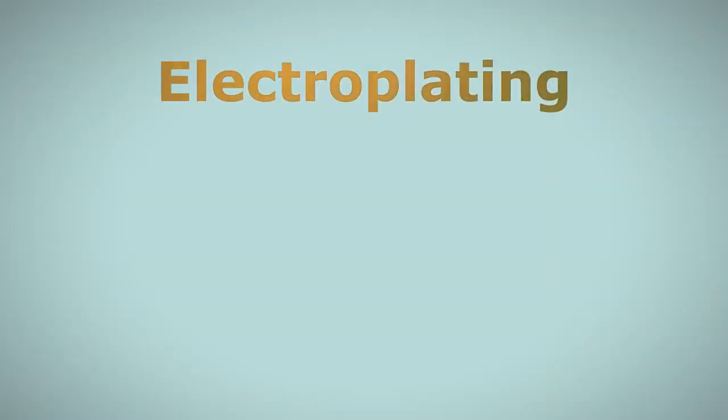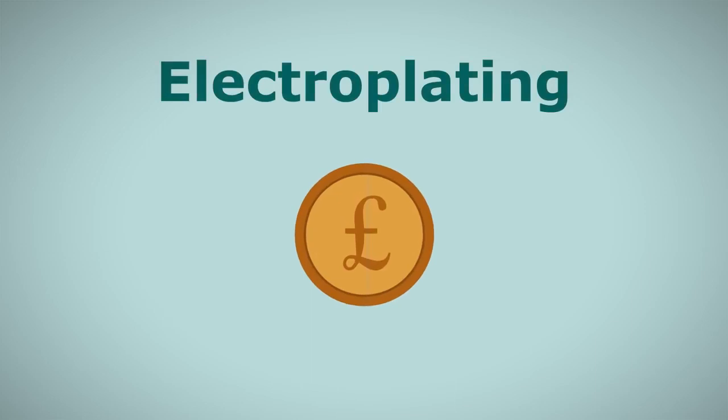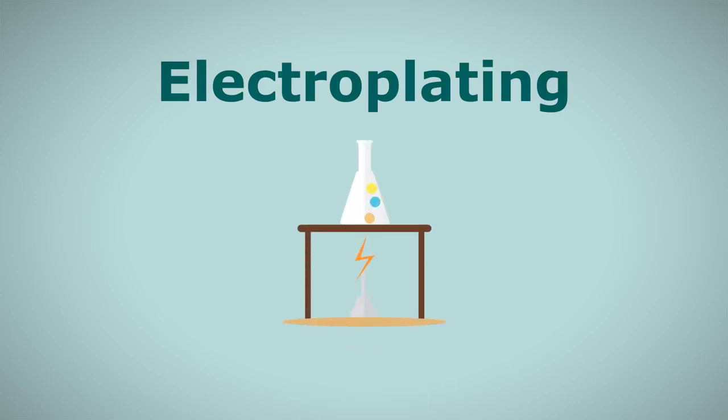In this video we're going to learn about electroplating. Electroplating is the process of coating one metal object with another. It works by electrolysis, which is when electricity is used to drive a chemical reaction.